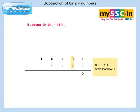0 minus 1 is equal to 1 with borrow 1. Let's borrow 1 from the left column. Thus the 1 in the left column becomes 0 and the current column gets 10 in binary, that is 2 in decimal. 2 minus 1 is equal to 1.